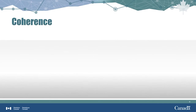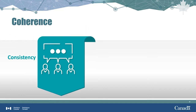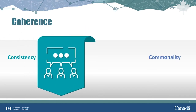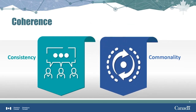Coherence can be split into two concepts: consistency and commonality. Consistency means using the same concepts, definitions, and methods over time. Commonality means using the same or similar concepts, definitions, and methods across different statistical programs. If there is good consistency and good commonality, then it is easier to compare results from different studies or track how they stay the same or change over time. With regards to data quality, coherence is the ability to make comparisons across cities, regions, time periods, etc.